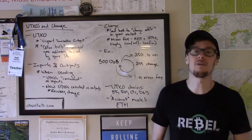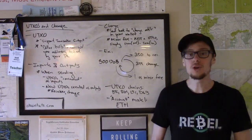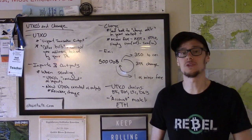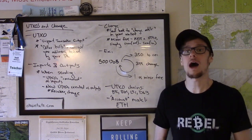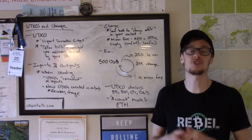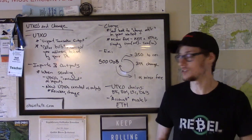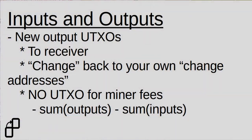Let's talk about the concept of inputs and outputs. When you actually create a Bitcoin transaction to send coins to somebody else, the transaction is constructed by first consuming inputs, which are UTXOs that are owned by your wallet. If your wallet has some Bitcoin in it, it has these essentially digital dollar bills called UTXOs. The transaction will consume however many UTXOs it needs to get at or above the amount that you are spending. Then new UTXOs are created as transaction outputs — those UTXOs go to the receiver, or back to you in the form of change, and there's also the concept of miner fees.